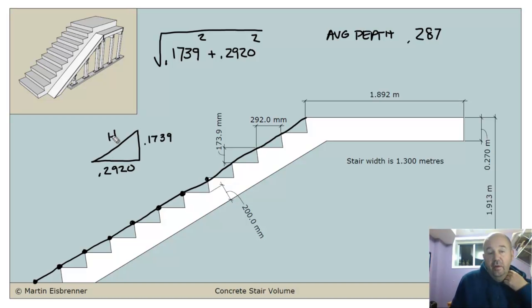0.1739 and 0.2920. Hopefully, you remember that this here is the hypotenuse. And the formula for finding the hypotenuse of this right-angle triangle is Pythagorean theorem, which is a squared plus b squared is equal to c squared, or a squared plus b squared root is equal to c.